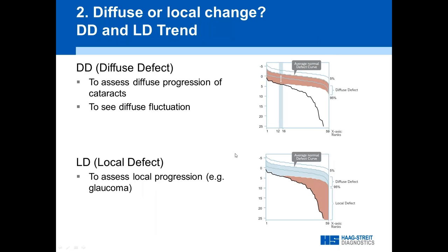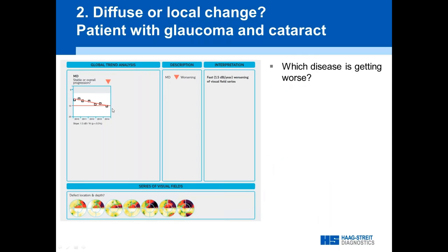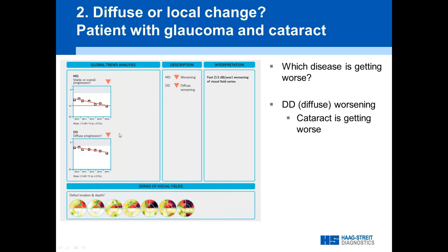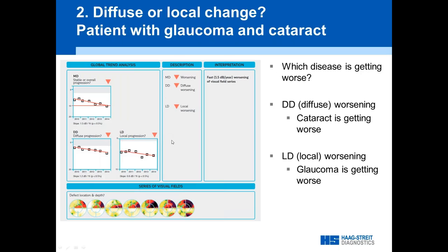To separate diffuse from local change, based on the defect curve, we take the whole field apart and define a diffuse defect component (DD) and a local defect component (LD), then track those separately using the exact same trend analysis with the same symbols. So: is there change? Yes, 1.5 dB per year. Is it diffuse? Yes — the cataract is progressing. Is it local? Yes — glaucoma is progressing too. And we have a complete answer.